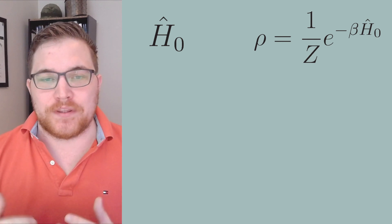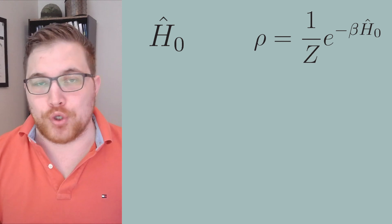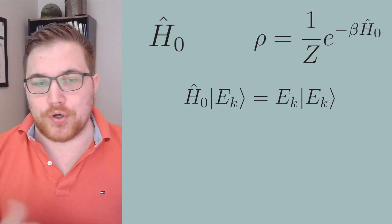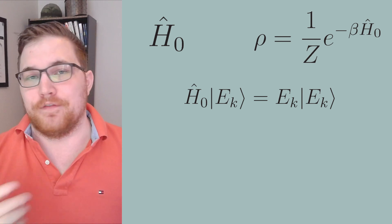So just to be thorough, let's expand what this means in the energy eigenbasis of our Hamiltonian H-naught. Let's assume that we've solved the eigenvalue problem of the Hamiltonian and we will label the energy eigenkets and energy eigenvalues in the following way.